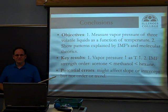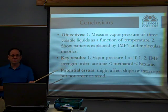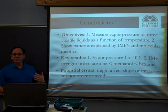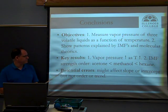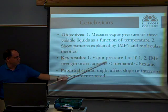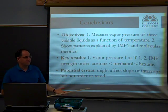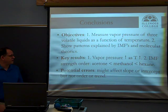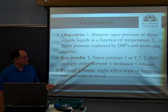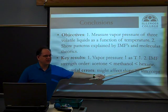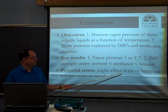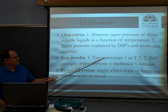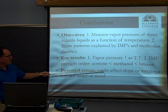Our conclusions: we set out to measure the vapor pressure of three volatile liquids as a function of temperature, which we did. We wanted to show that observed patterns could be explained by molecular-level theories — the kinetic molecular theory and intermolecular forces. Our key results: vapor pressure increases as temperature increases, which agrees with kinetic molecular theory. And intermolecular force strength increases in this order: acetone has the weakest, then methanol, then hexane with the strongest. We examined potential errors and determined they might affect the slope or intercept on our graph, but not the trend or the ordering of the three liquids.